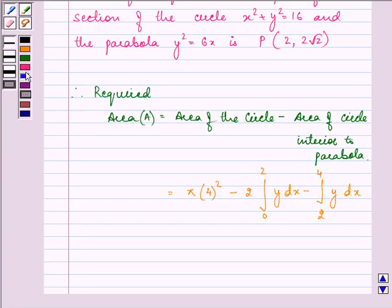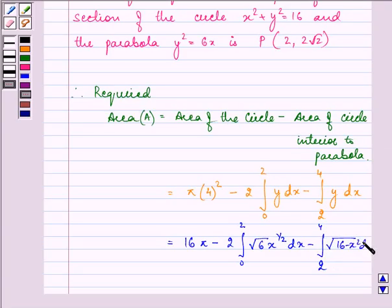We need to simplify this expression. We have 16π minus 2 integral 0 to 2, where the value of y will be √(6x)^(1/2) dx, and from 2 to 4 √(16 - x²) dx.